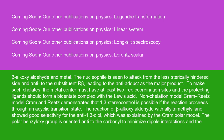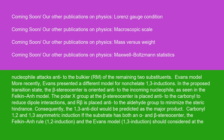To make such chelates, the metal center must have at least two free coordination sites, and the protecting ligands should form a bidentate complex with the Lewis acid. Non-chelation model (Cram-Reetz model): Cram and Reetz demonstrated that 1,3-stereocontrol is possible if the reaction proceeds through an acyclic transition state. The reaction of beta-alkoxyaldehyde with allyltrimethylsilane showed good selectivity for the anti-1,3-diol, which was explained by the Cram polar model. The polar benzyloxy group is oriented anti to the carbonyl to minimize dipole interactions, and the nucleophile attacks anti to the bulkier RM of the remaining two substituents.